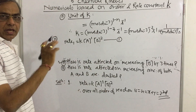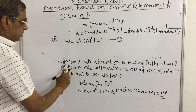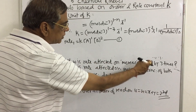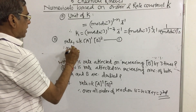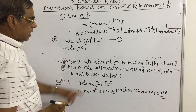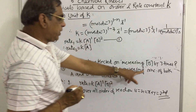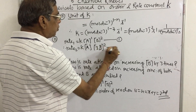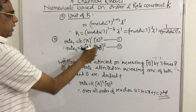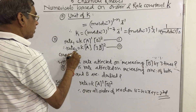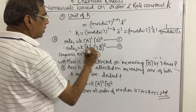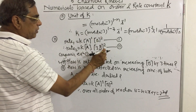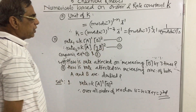This is equation 1 — the original rate law. Now what are the changes? When the concentration of B is increased 3 times, we write Rate₂ equals k into concentration of A raised to the power 1, and 3B raised to the power 2. Now comparing equation 1 and equation 2, k cancels, A cancels, and B squared cancels, leaving 3 raised to the power 2.